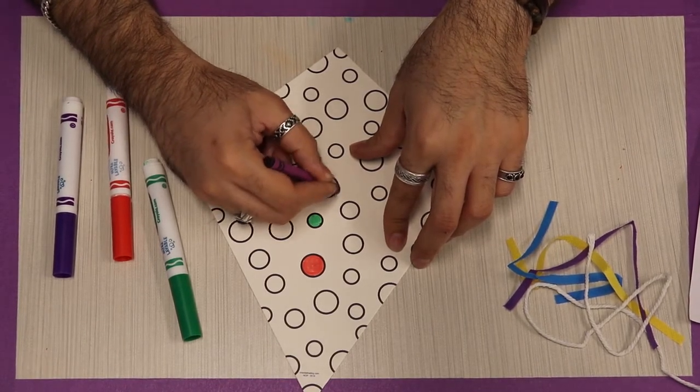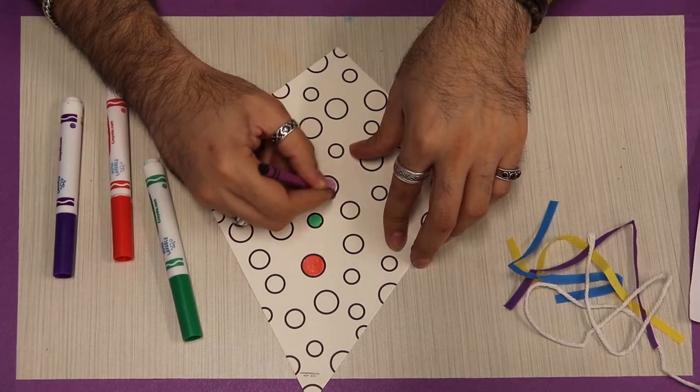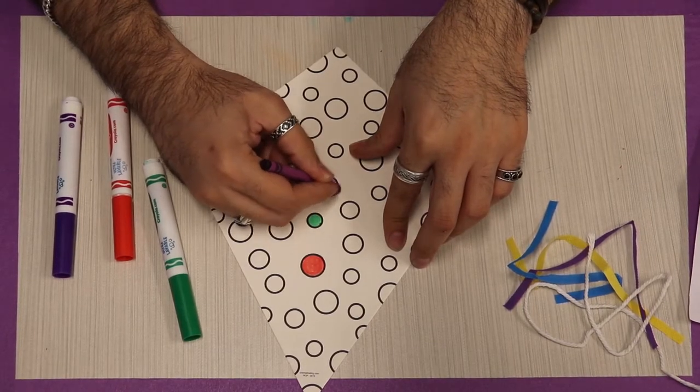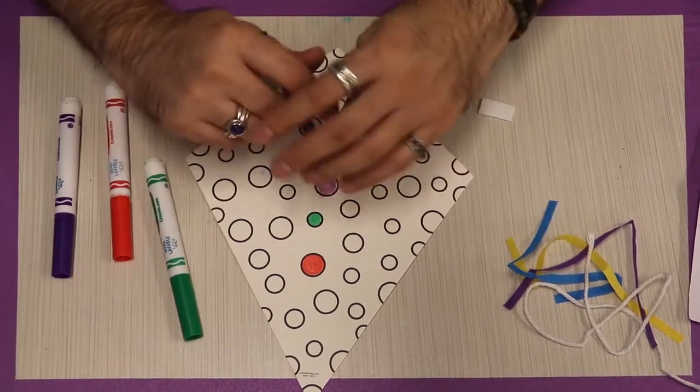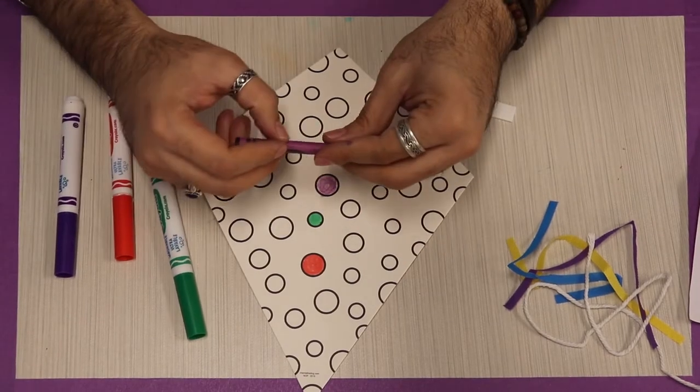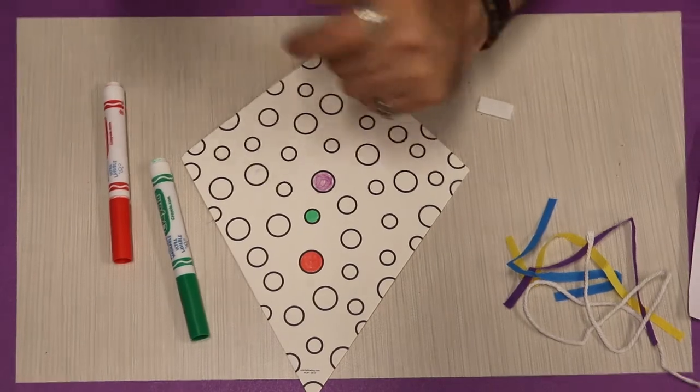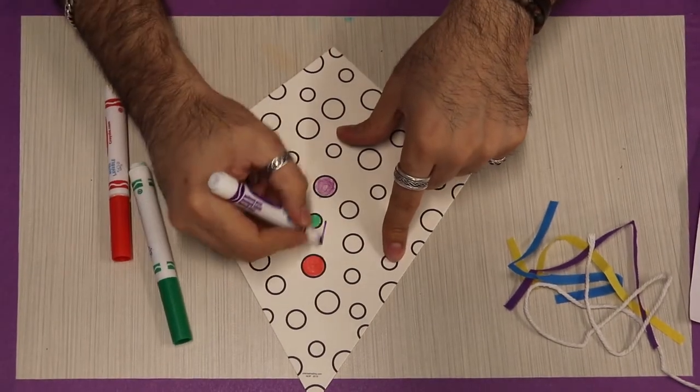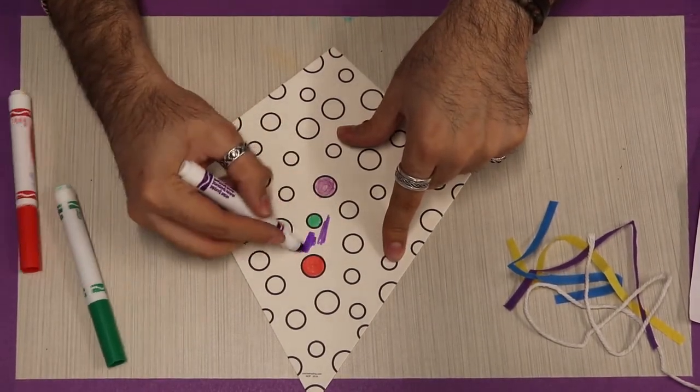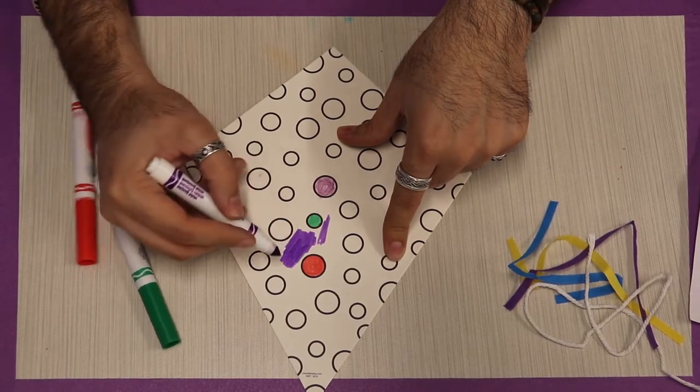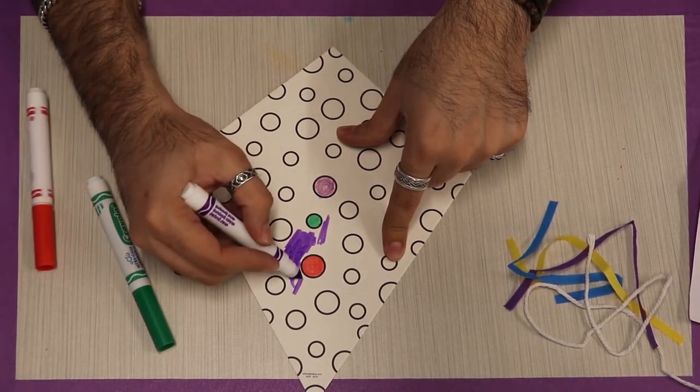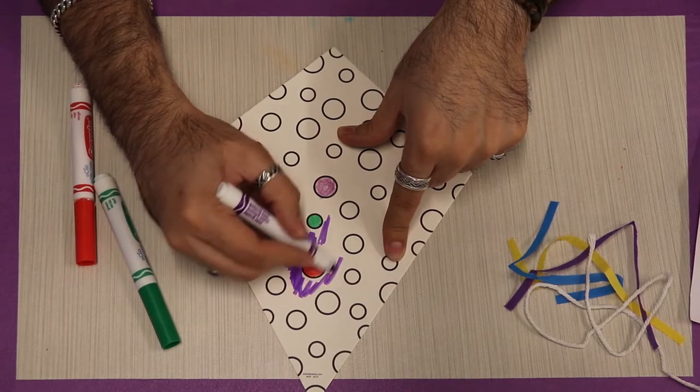So you can just color this however you like. This works with map pencils, pens—maybe you don't want to color it. Maybe you just want to build the kite, and that's okay too. This is whatever you want it to be. You make it yours. So I did red and I did green, and then I'm going to do the body of the kite purple. Oh, that's a pretty color purple! Well, they're all pretty color purples, right?